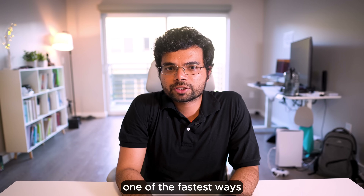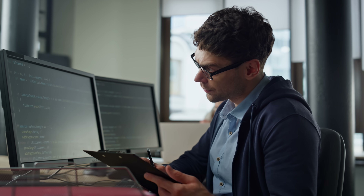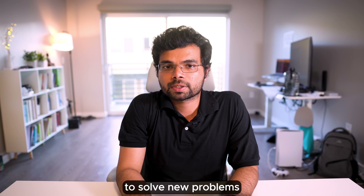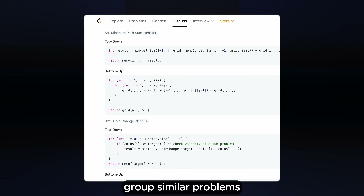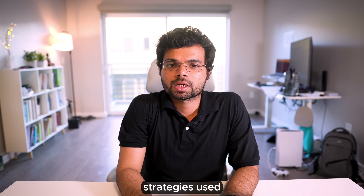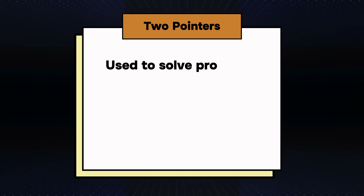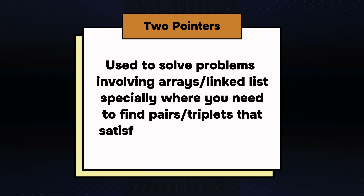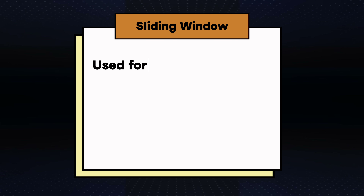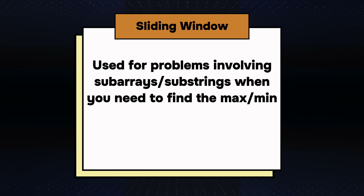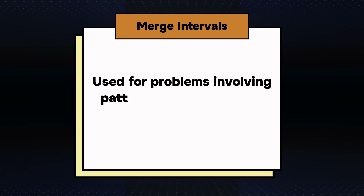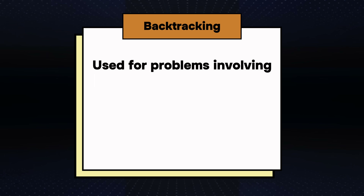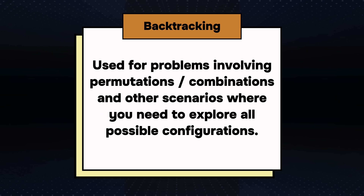Next, think in patterns. One of the fastest ways to get better at DSA is to think in terms of patterns. Knowing these patterns can help you quickly identify the right approach to solve new problems and enable you to solve a large number of problems in less time. Some of the common problem-solving patterns are: two pointers, used to solve problems involving arrays or linked lists, especially where you need to find pairs or triplets to satisfy certain conditions; sliding window, used for problems involving sub-arrays or sub-strings, particularly when you need to find the maximum, minimum, or a specific condition within a fixed-size window; fast and slow pointers, used for problems related to finding cycles in linked lists or arrays; merge intervals, used for problems involving merging overlapping intervals; and backtracking, used for problems involving permutations, combinations, and other scenarios where you need to explore all possible configurations.